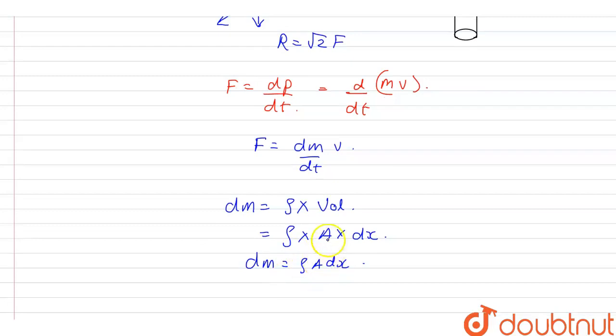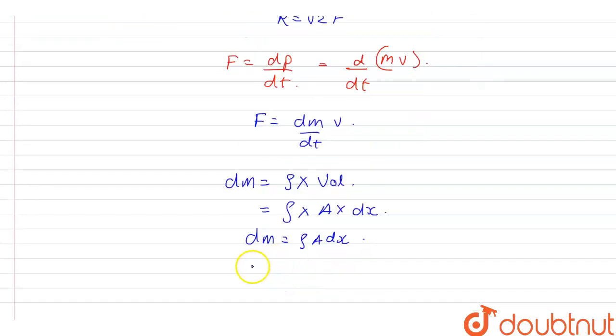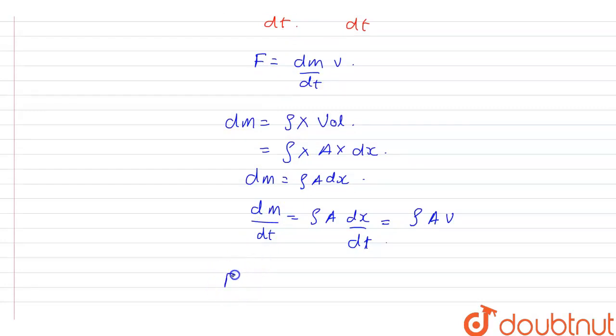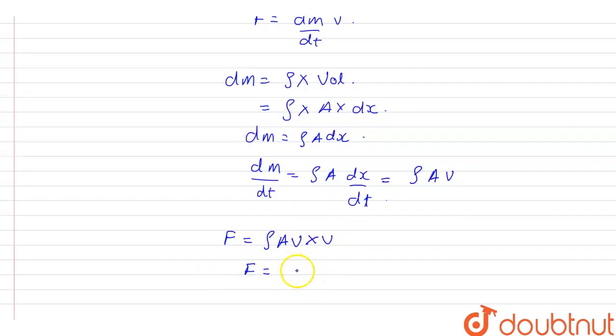So from here to find the mass rate flow of water, that will be equal to dm/dt. This will be ρA dx/dt. So this will be equal to ρA times dx/dt, which is velocity. So I can substitute this equation here. So force will be equal to ρAV multiplied by V. Therefore, F is ρAV².